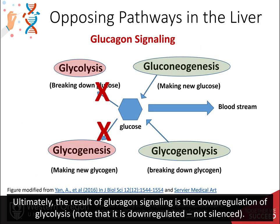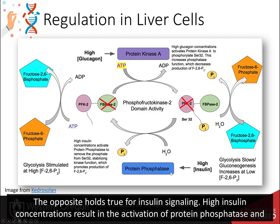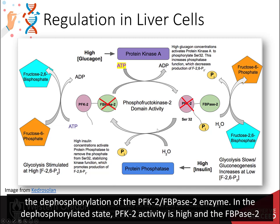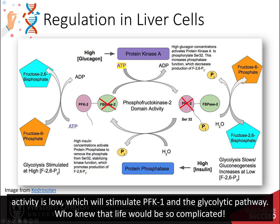Ultimately, the result of glucagon signaling is the downregulation of glycolysis — note that this is downregulated, not silenced. The opposite holds true for insulin signaling. High insulin concentrations result in the activation of protein phosphatases and the dephosphorylation of the PFK2-FBPase2 enzyme. In the dephosphorylated state, PFK2 activity is high and FBPase2 activity is low, which will stimulate PFK1 in the glycolytic pathway.